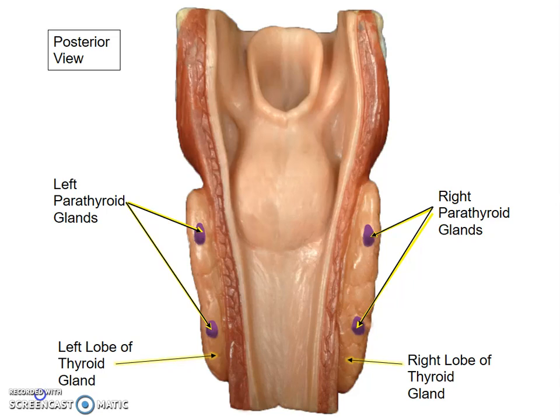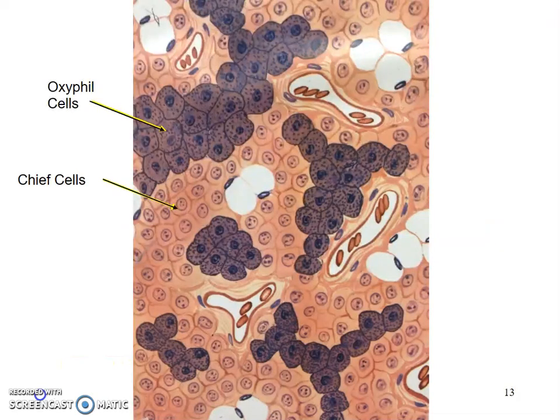Found down the center is a channel or passageway — the larynx — running posterior to the actual thyroid gland. Now, looking at the histological view of the actual parathyroid glands, you can see it is nothing like the thyroid gland.